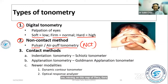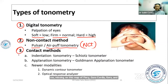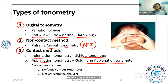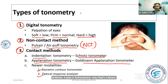Contact methods include indentation tonometry, for example the Schiotz tonometer, and applanation tonometry, for example the Goldmann applanation tonometer. Newer modalities include the dynamic contour tonometer and the ocular response analyzer.